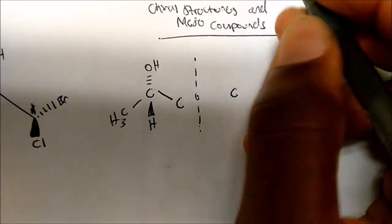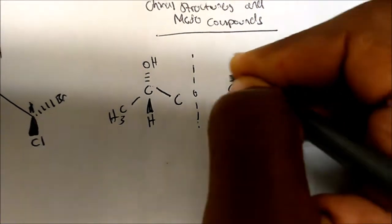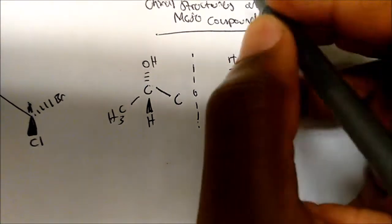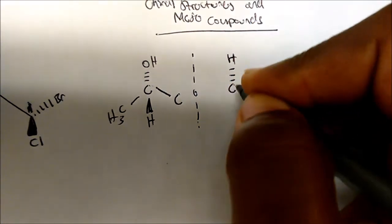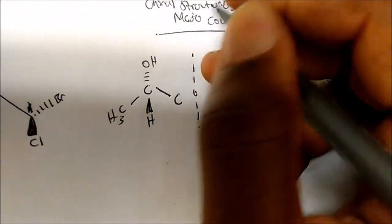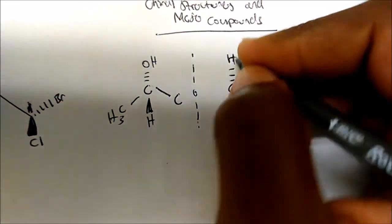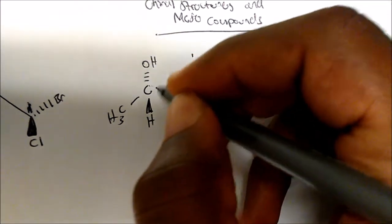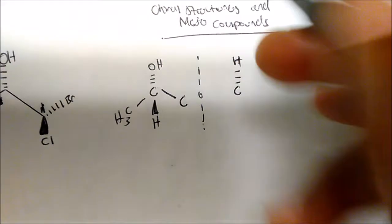So that means everything else has to move two places. My hydrogen goes two places so it will be going away from me. Here's where it gets tricky — immediately after you move that hydrogen, the substituent that was going away has to move immediately. My hydrogen takes the place of the OH, so the OH has to move two places also.